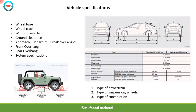The wheelbase is the distance between the front and rear wheels, shown here as number 4. Wheel track is the distance between the left and right wheel centers. The width, height, and length of the vehicle are straightforward dimensions.